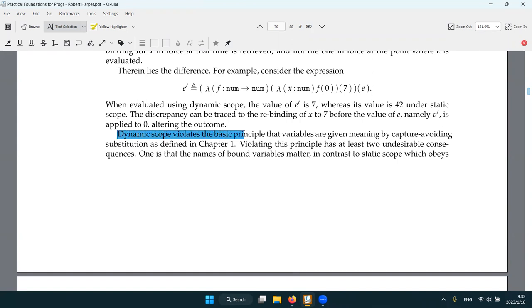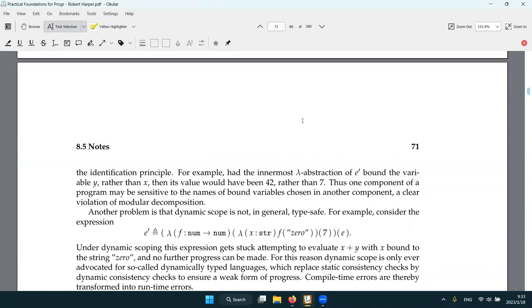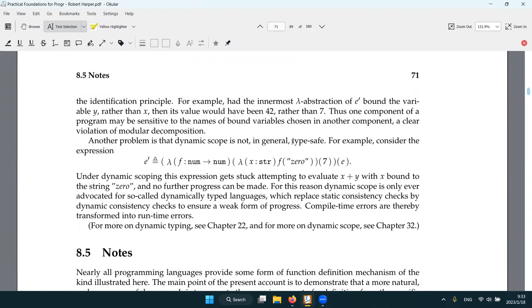While it's the basic principle that variables are given meaning by capture, avoiding substitution as defined in chapter one. Yeah, the name of bound variable matters. We have an AST. We can't just change a variable name systematically without changing its meaning. Also, I guess the bigger problem is it is not typesafe.